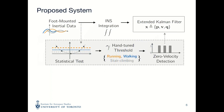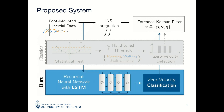Rather than rely on the selection of a hand-tuned threshold, our approach completely replaces the standard zero velocity detector with a learned model that uses a long short-term memory neural network, or LSTM, to classify zero velocity events given the raw IMU data as input. We will see shortly how such a system can outperform existing zero velocity detectors that rely on hand-tuned thresholds.